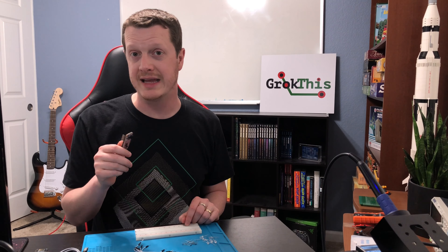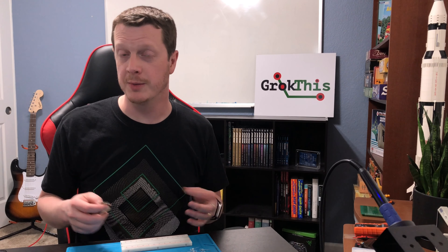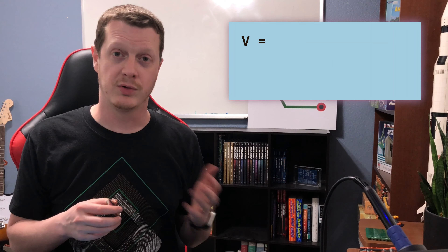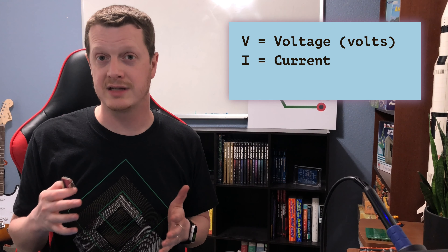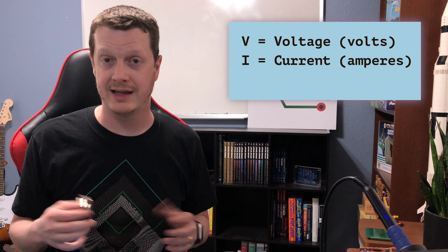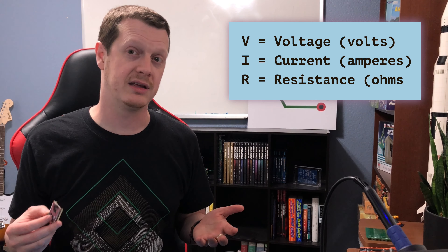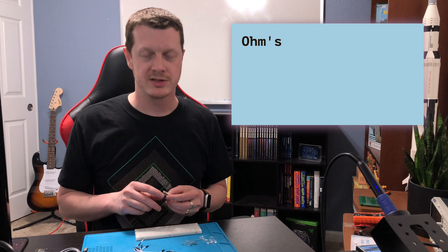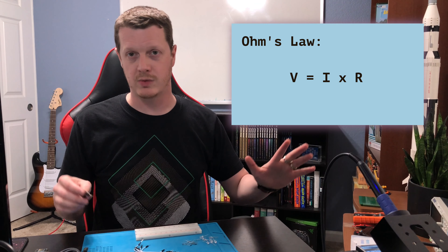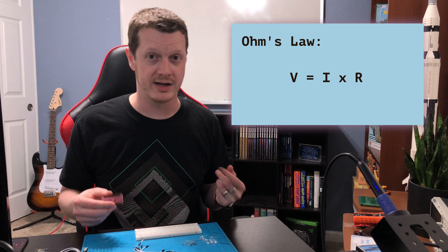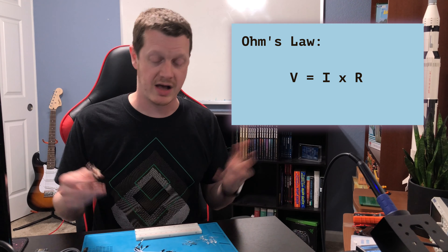George Ohm was a physicist who lived in the early 1800s and he discovered Ohm's law. It is the relationship between voltage, current, and resistance. Voltage is typically labeled with a V, current with an I, and R stands for resistance. So V equals IR is the Ohm's law equation. You will run into this equation over and over in your digital electronics hobby.